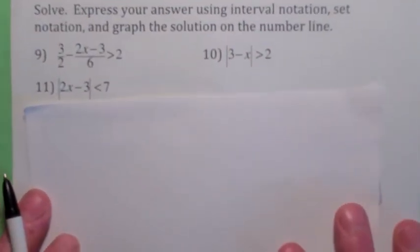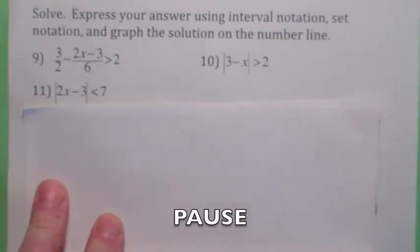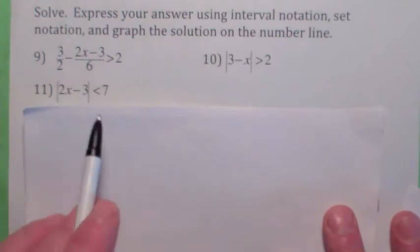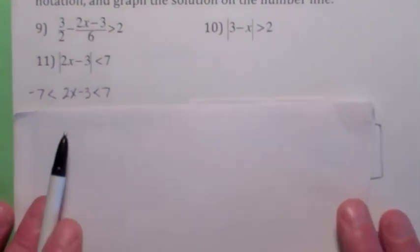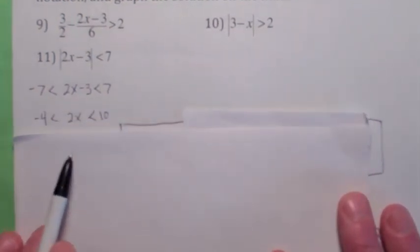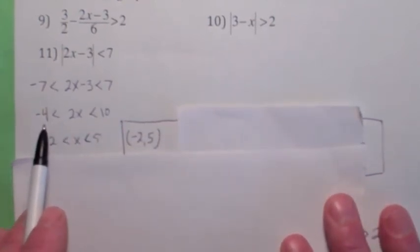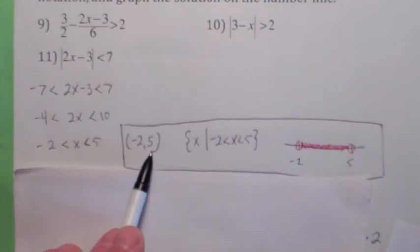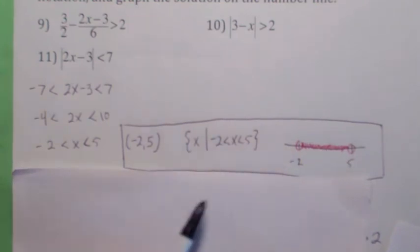Let me give you a bunch — get a piece of paper out, hit the pause button and try these three. Let's do number 11 first. Since it's an absolute value less than 7, that's where you say it's between negative 7 and 7. So to finish this problem, you would add 3 to everything. Then you would divide everything by positive 2. You get this. So in interval notation it would be open on negative 2, open on 5. Set of all x such that negative 2 is less than x is less than 5. Everything between negative 2 and 5 with open circles on both.